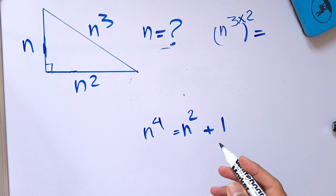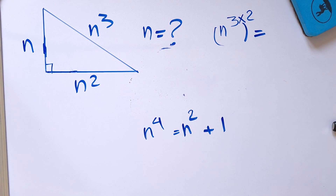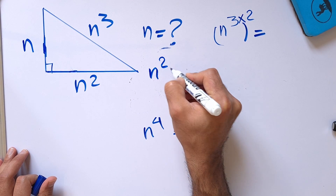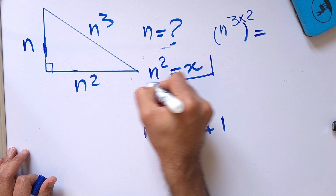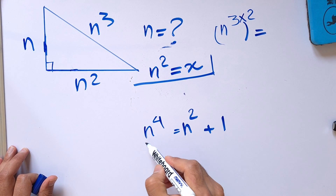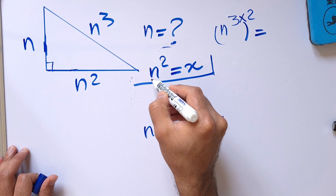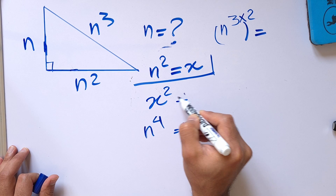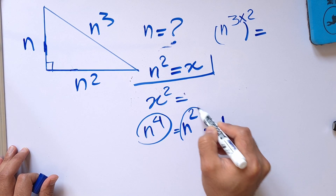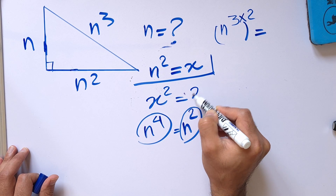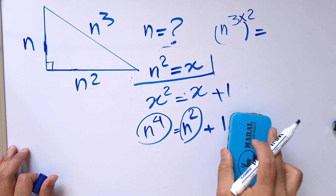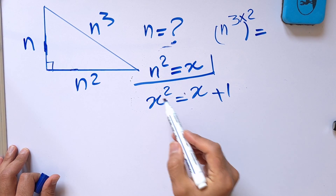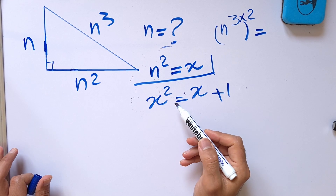In this type of equation we can create a substitution variable. Let's assume n squared equals x. Then n to the 4 is n squared squared, which is x squared, and n squared equals x. So the equation becomes x squared equals x plus 1 — a classic quadratic equation.